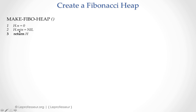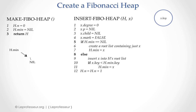After we have this heap, we can insert nodes into it. Assume we have a node whose key is already defined and we want to insert it into heap H. Lines one through four update the properties of this node: x.degree is set, x.p is the pointer to its parent, x.child is the pointer to its child, and x.mark is set to false, meaning this node is not marked.